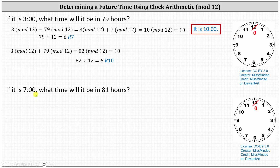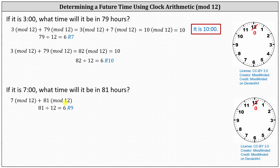For our second example, if it is seven o'clock, what time will it be in 81 hours? We can write this as seven mod 12 plus 81 mod 12. Again, we'll show this both ways. Let's evaluate 81 mod 12, which is equal to the remainder when 81 is divided by 12, which gives us nine.